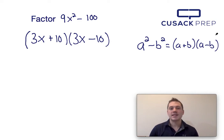And there you have it. That's how you factor 9x squared minus 100 using the difference of squares equation. Thank you for watching.